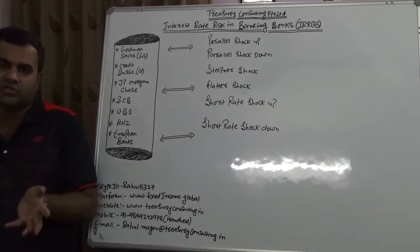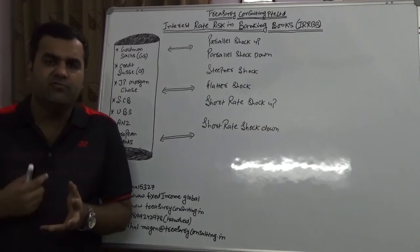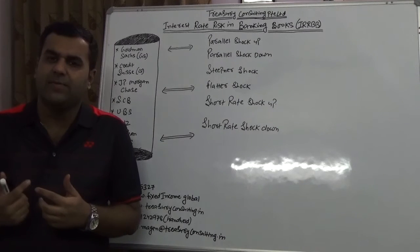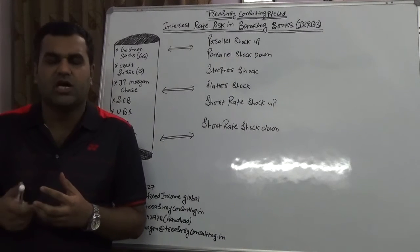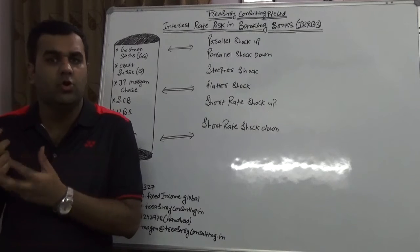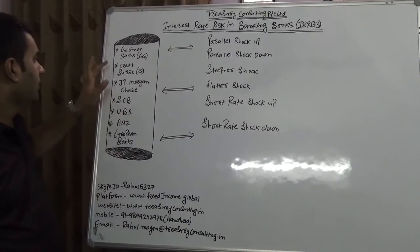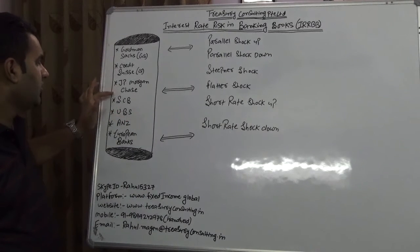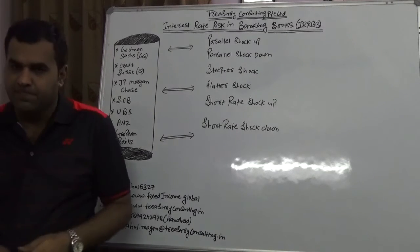Here are the different types of shocks. For the sake of example, we have taken a few banks which are very well known in the market: Goldman Sachs, Credit Suisse, JP Morgan, Standard Chartered, UBS, ANZ, and a few European banks. I would like to concentrate my position only on Goldman Sachs because this is a very perfect example in that regard.